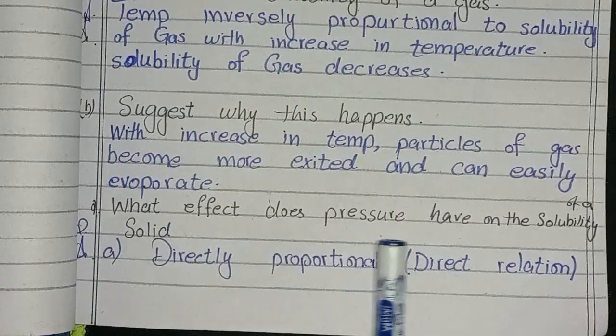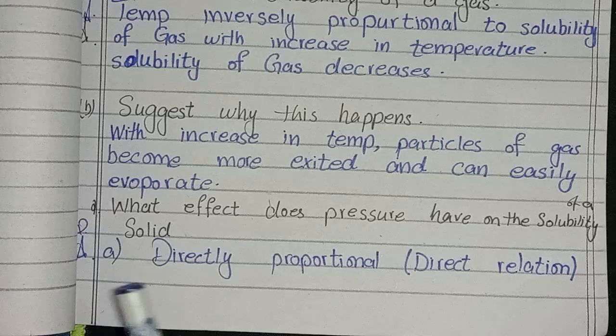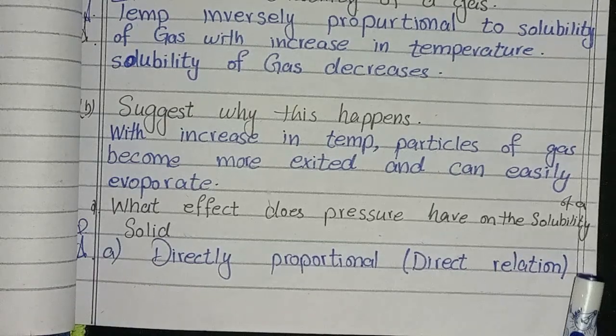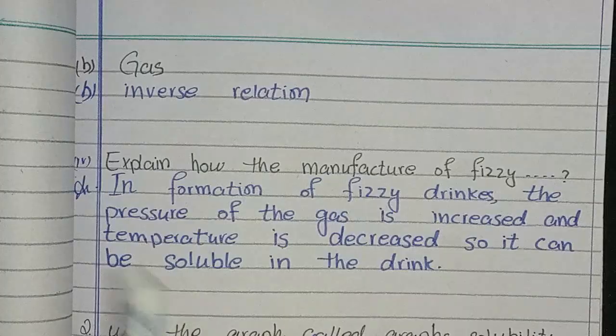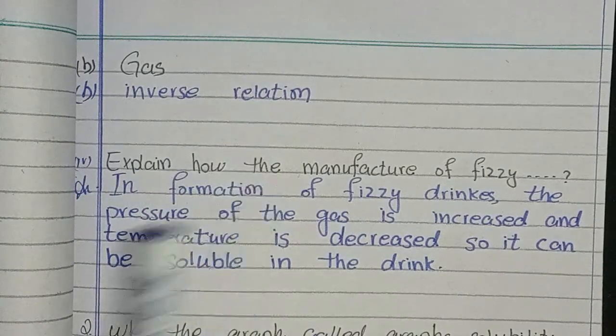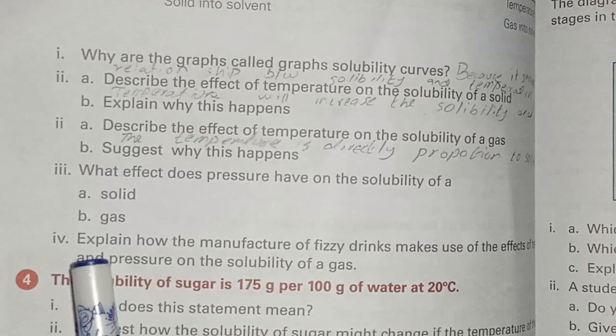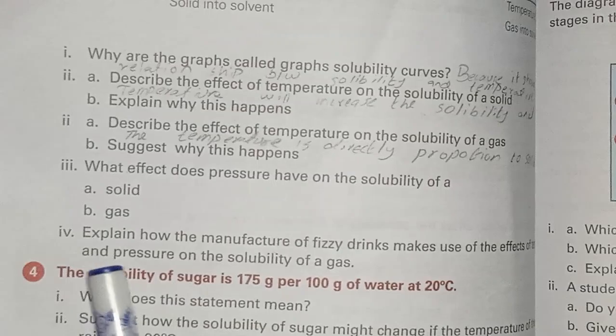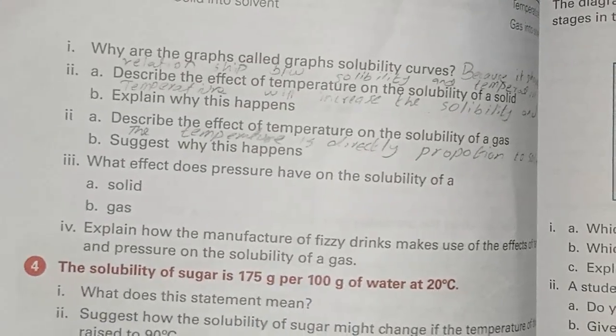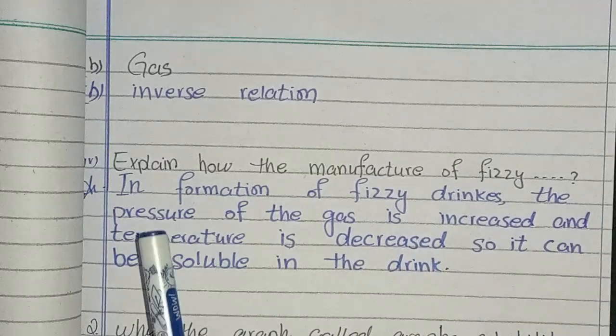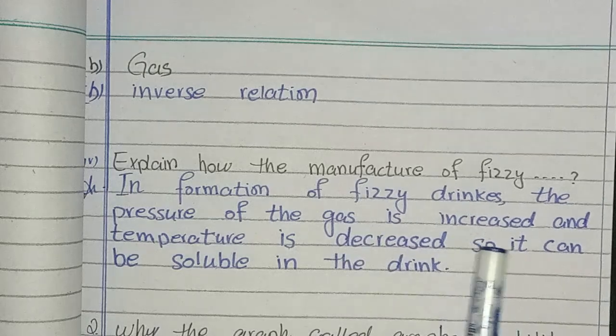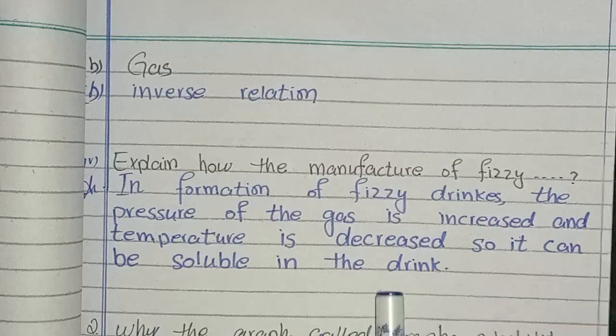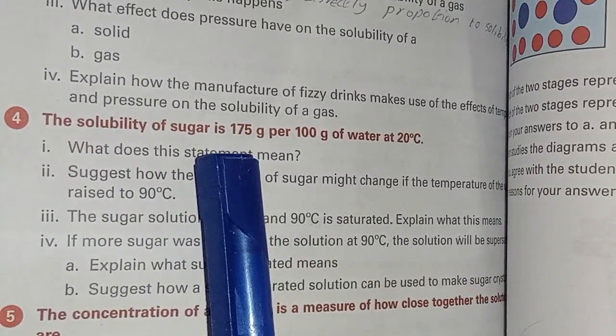What effect does pressure have on the solubility of a solid? This is directly proportional - direct relation for gas, inverse relation. Last question: Explain how the manufacture of fizzy drinks makes use of the effect of temperature and pressure on the solubility of a gas. In the formation of fizzy drinks, the pressure of the gas is increased and temperature is decreased so it can be soluble in the drink.